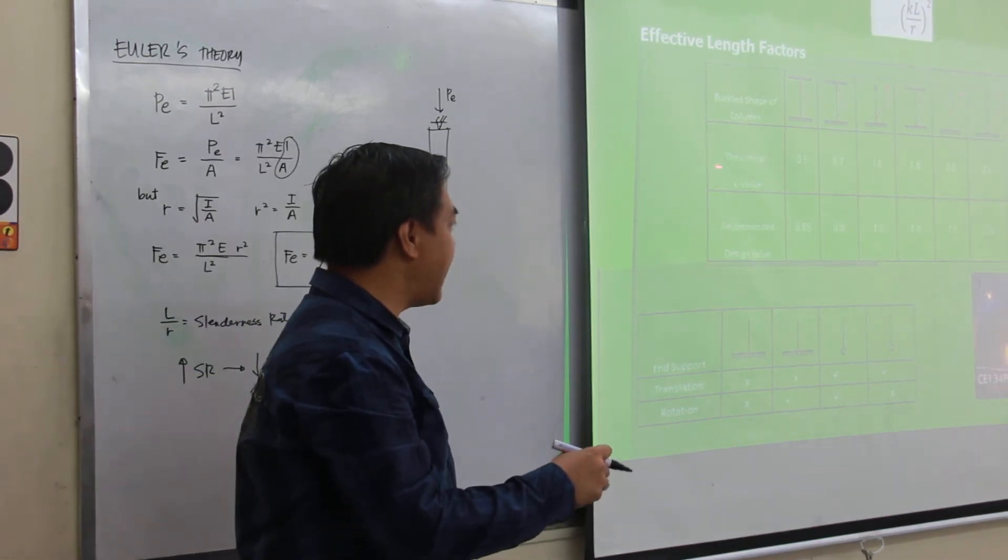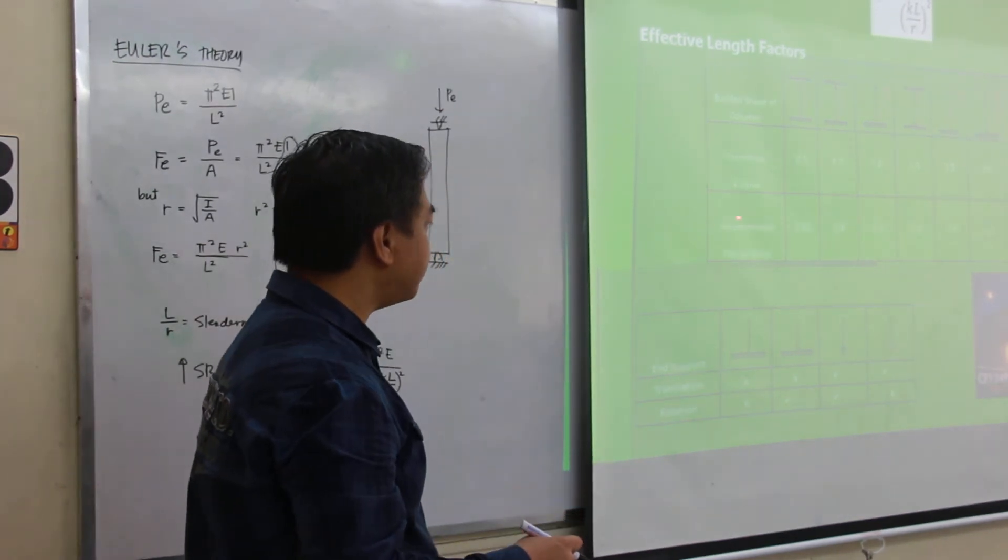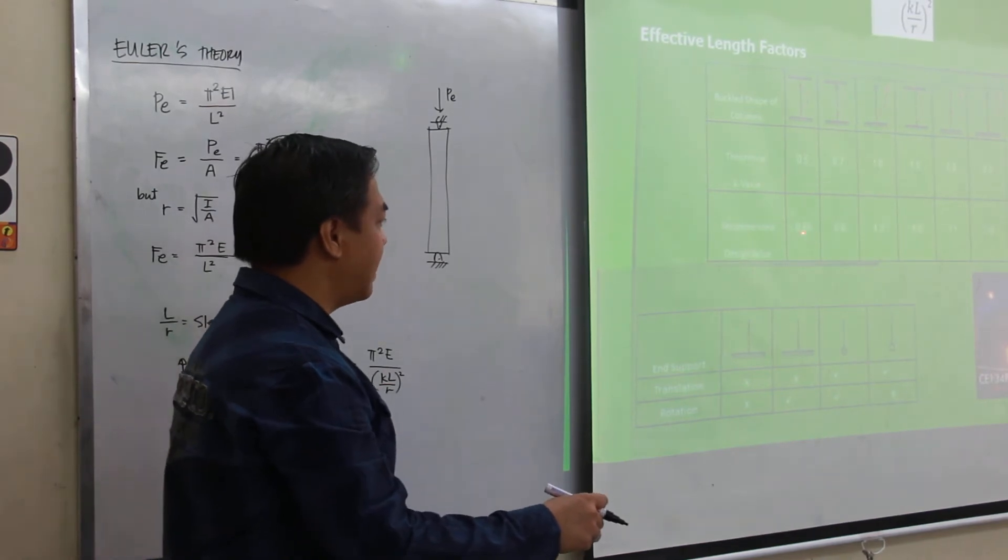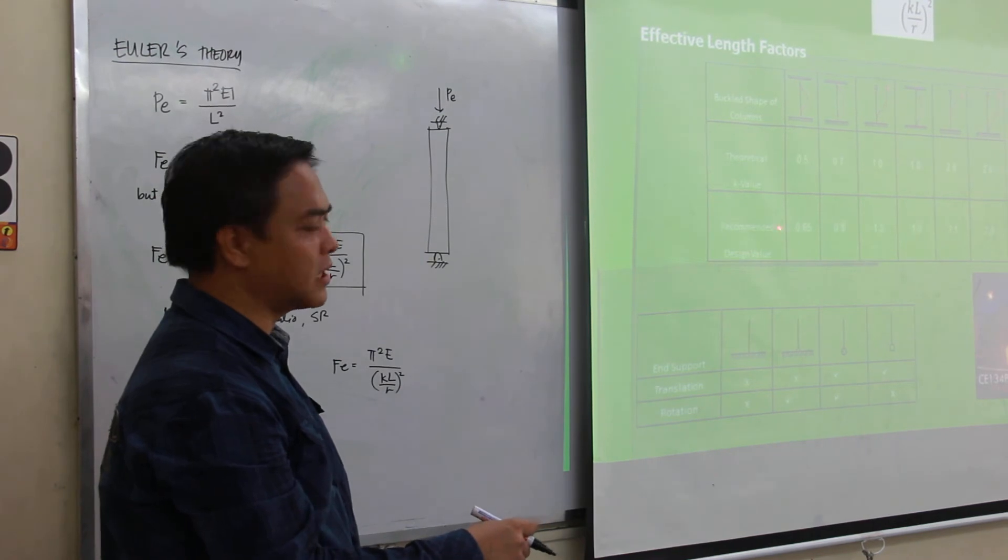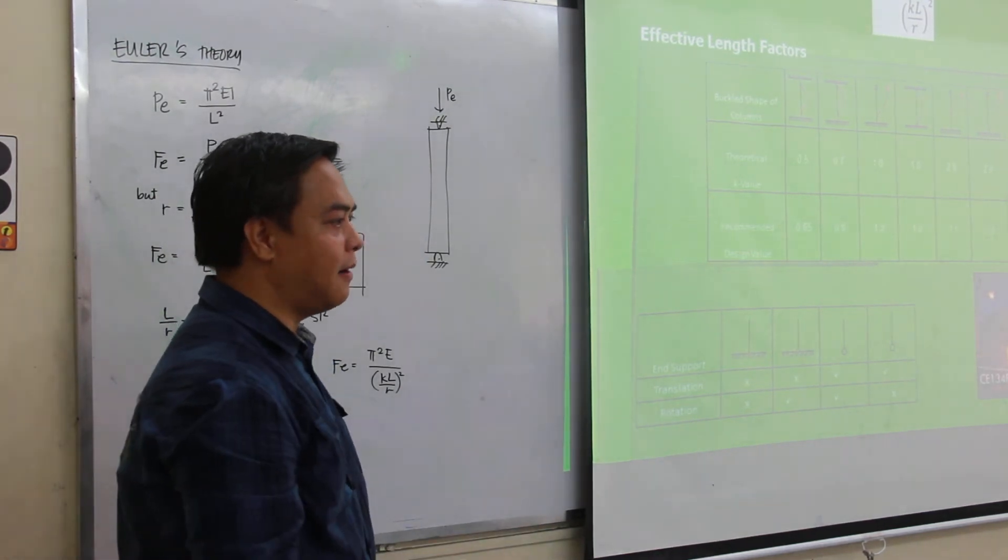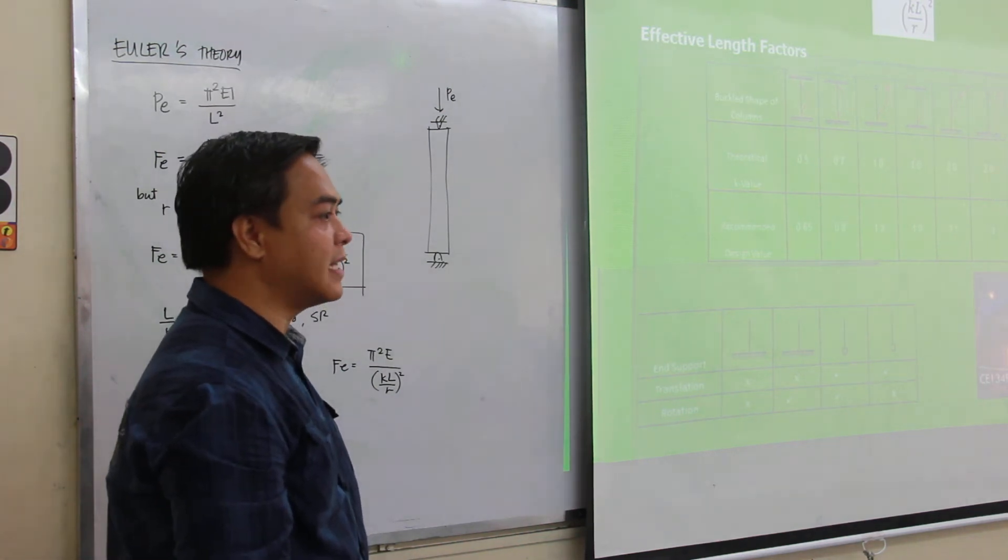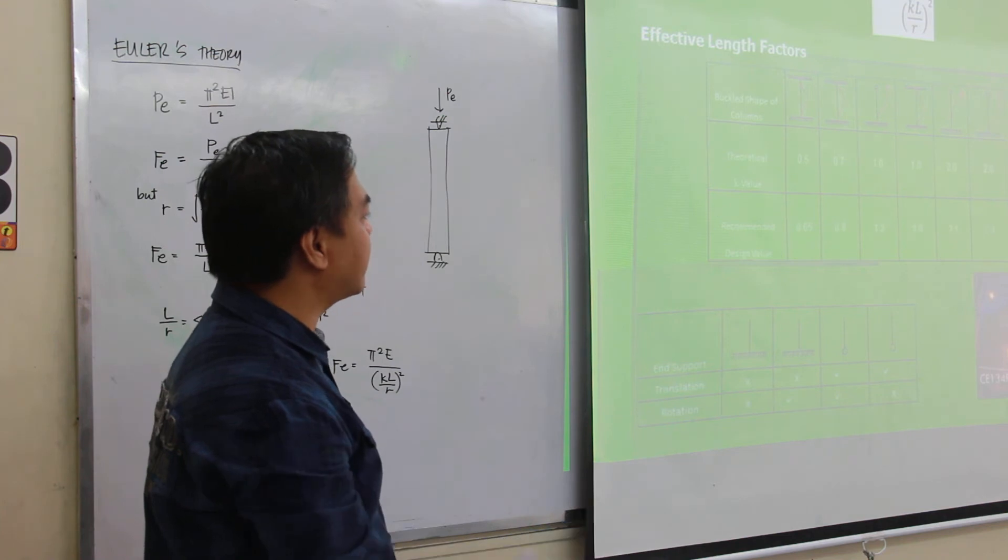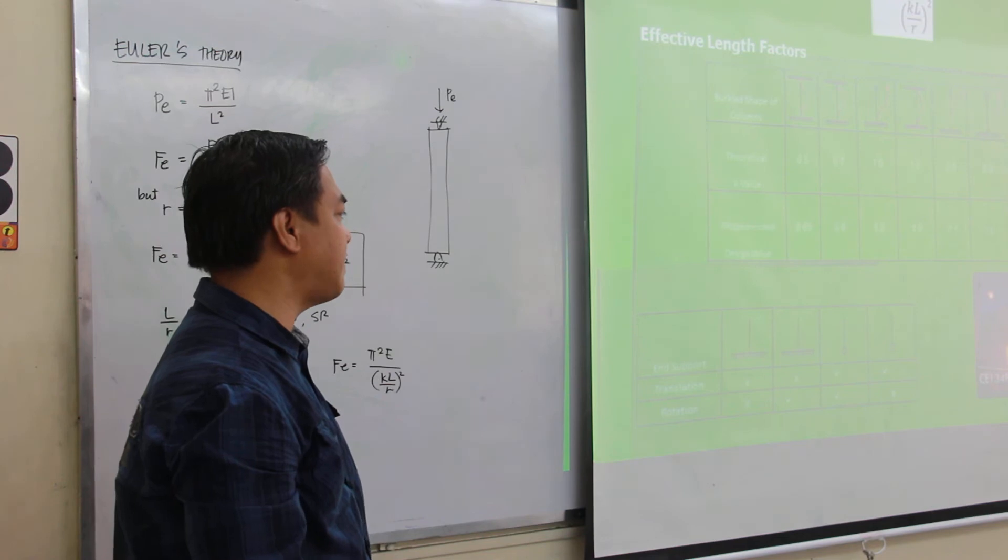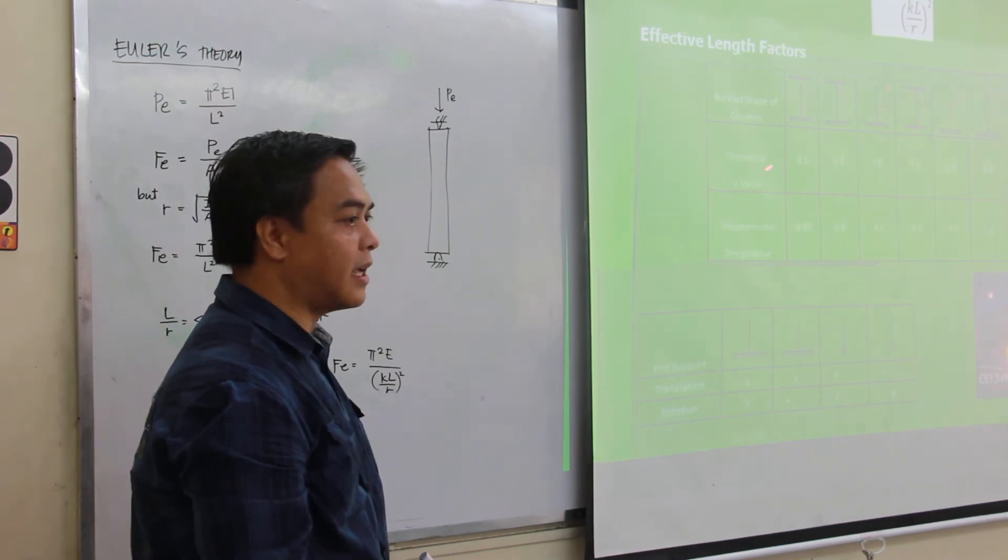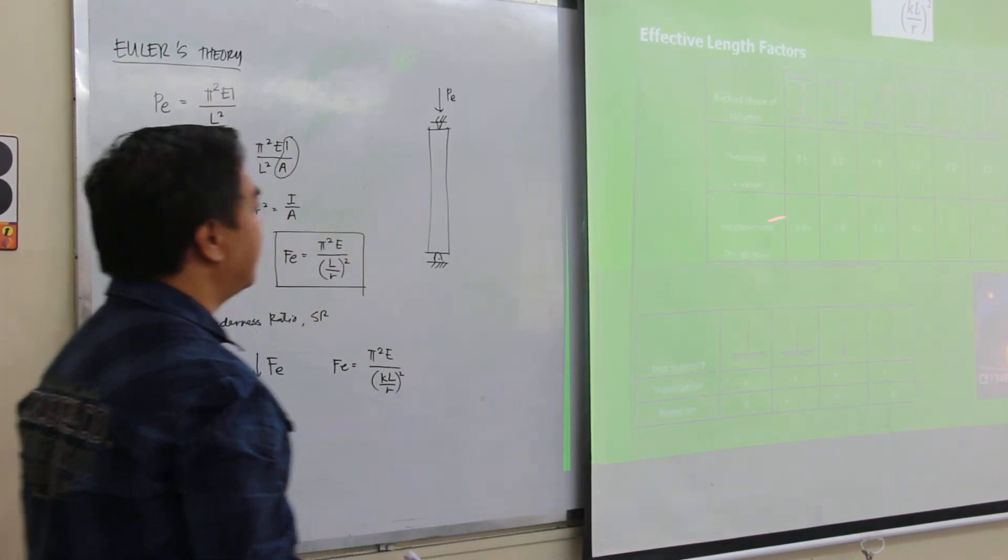So comparing the theoretical and the recommended design values, design values are relatively larger compared to the theoretical values. Because of course, whenever we are designing, we want to have more conservative analysis or even design. So that's why these are relatively greater. But in the board exam, unless otherwise it is specified, and even during our exams, we will be adopting the theoretical K values.